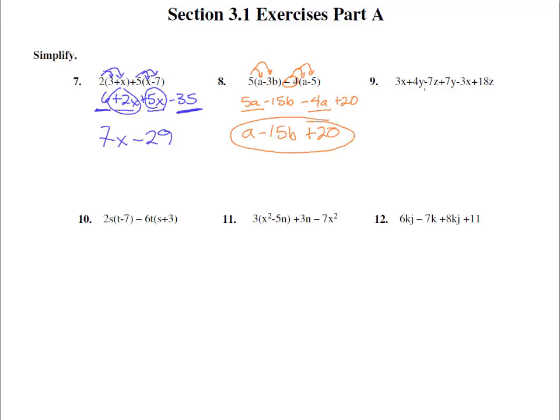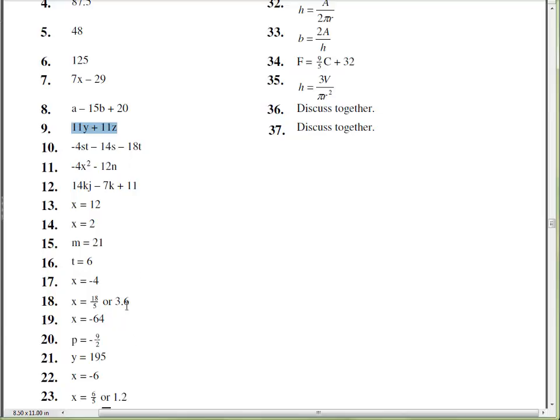Number 9, we don't have any parentheses, so we just need to highlight and find the like terms. Here's a 3x and a -3x. Well that adds to 0, so those guys go away. They cancel. Now we have a +4y. Any other y's? And we do. There are the y's right there. 4y and 7y is 11y. And then we have a -7z. And a +18z. -7+18, that's +11z. Let's check our answer. 11y+11z. Good.